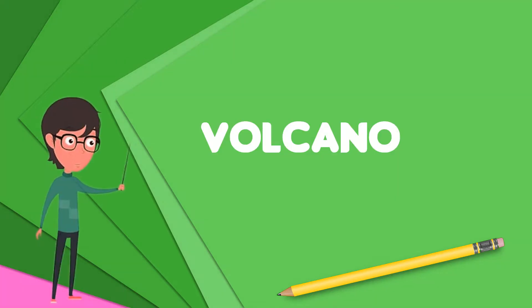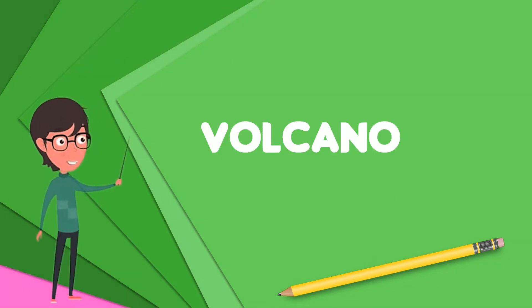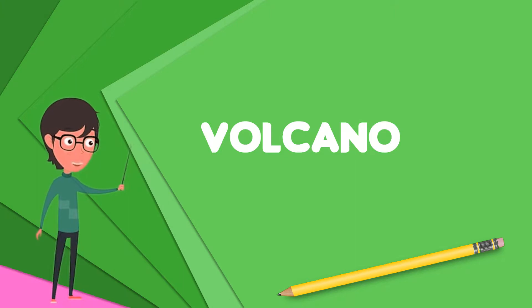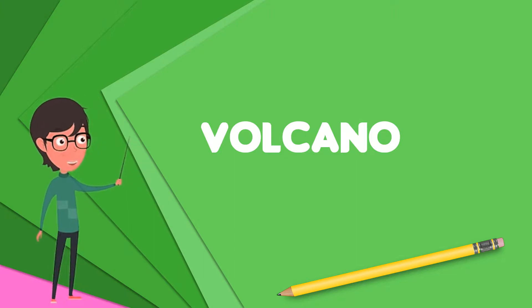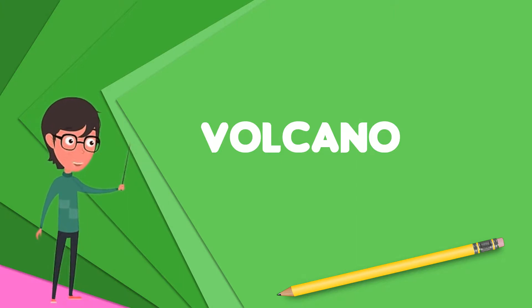A volcano is a rupture in the crust of a planetary mass object, such as Earth, that allows hot lava, volcanic ash, and gases to escape from a magma chamber below the surface.